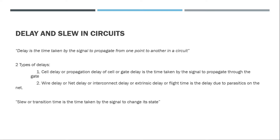Wire delay is the delay due to parasitics on the net. We sometimes consider wires as ideal, but in reality wires have their own parasitic resistance and capacitance. We call them parasitic because we don't want them — it is unintended and unwanted resistance and capacitance. Because of this, we have wire delay, and wire delay is most dominant in today's technology nodes, encompassing more than 80% of the total propagation delay of the entire chip.